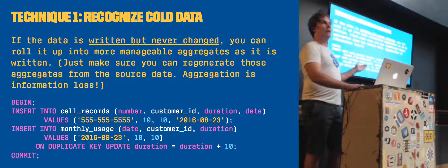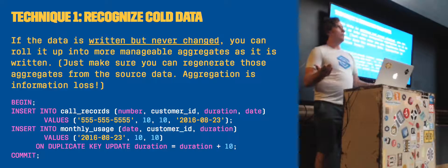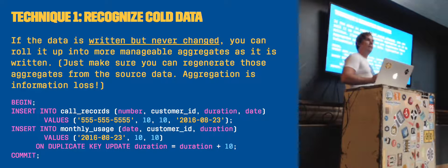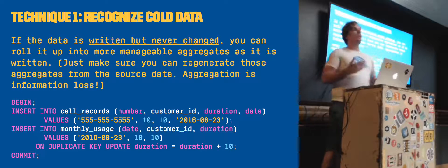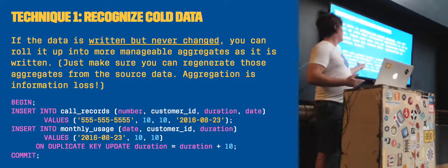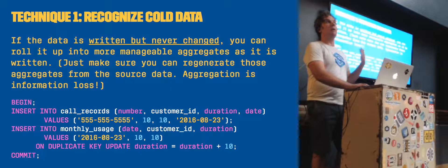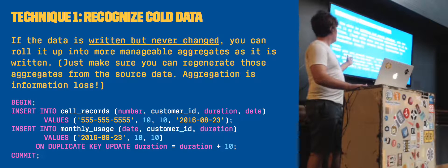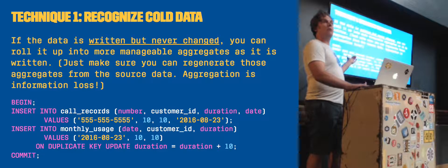The aggregates are lossy - when you add two numbers together, you can never get those numbers back out again. So when you aggregate, you want some way to rebuild the aggregate in case something gets lost. But the principle is sound. As long as you recognize that the data is cold, you can create write caches that aggregate data over time.